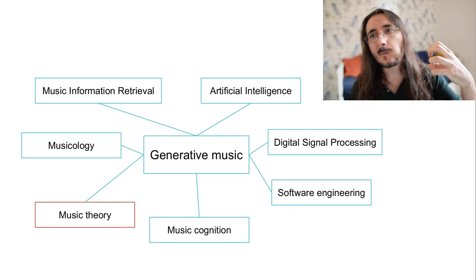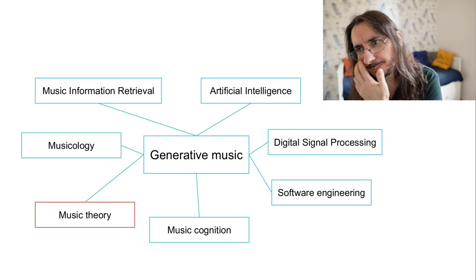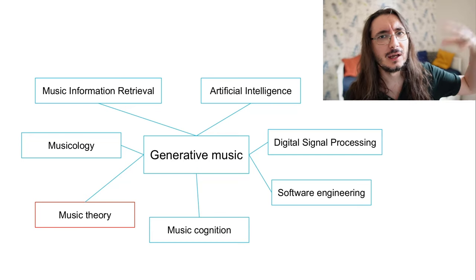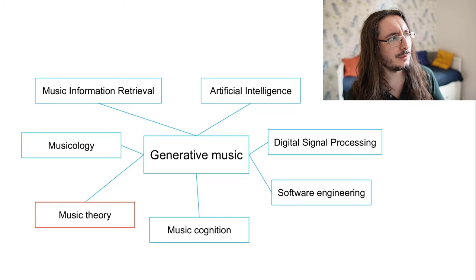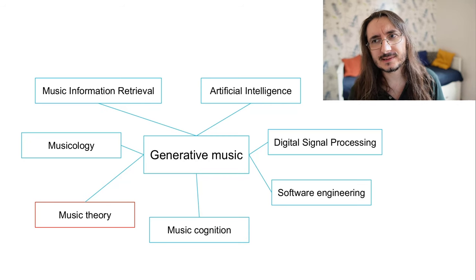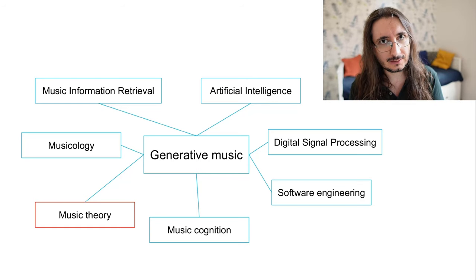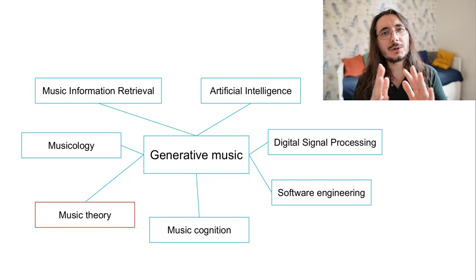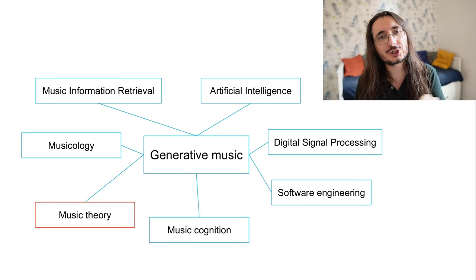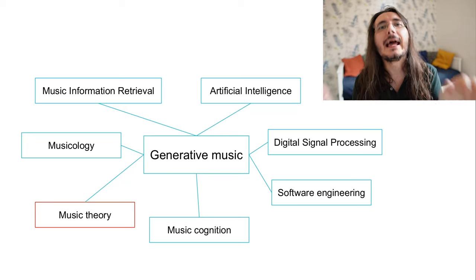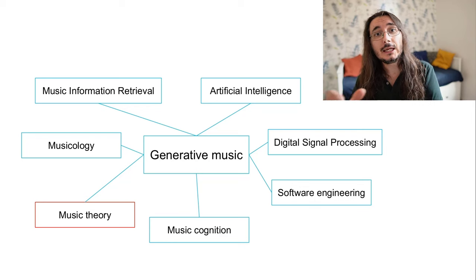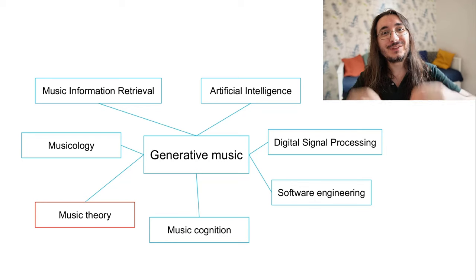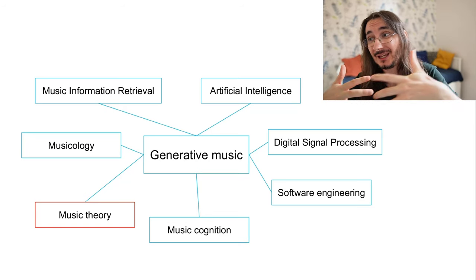Music cognition is also very important for generative music. When I was working at Melodrive, we were building a music AI engine that would generate music and change its emotional state on the fly. We had to use a lot of knowledge from music cognition in order to create music that could elicit a particular emotional response in the user. Music theory is extremely important as well — you want to use it to encapsulate as much knowledge as possible in your system. For example, take Riffusion, one of the latest generative music models using deep learning. The problem with Riffusion and similar deep learning models is that they tend to create short segments of music. If you want a full composition, you have to stitch together many musical phrases, and you need a good understanding of music theory to understand how to do that effectively.